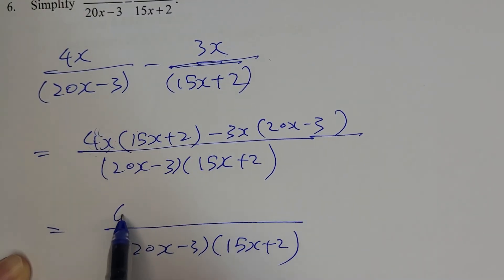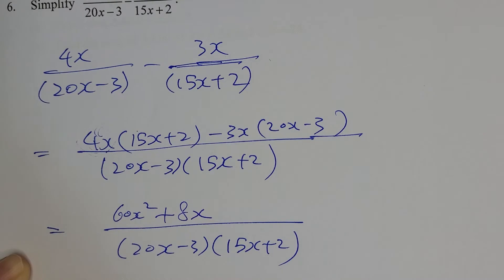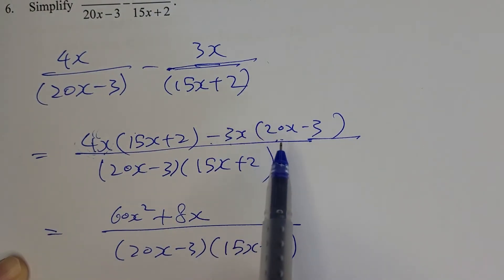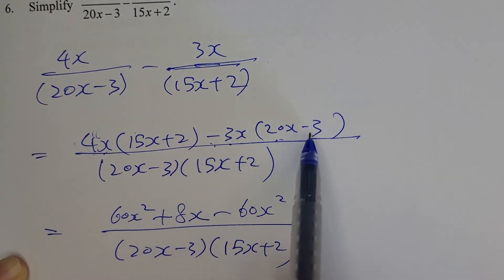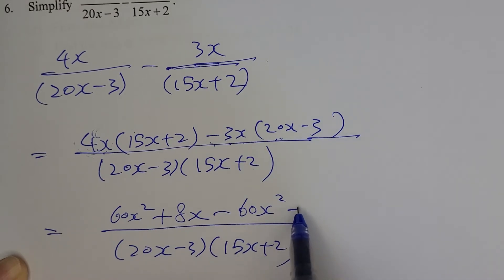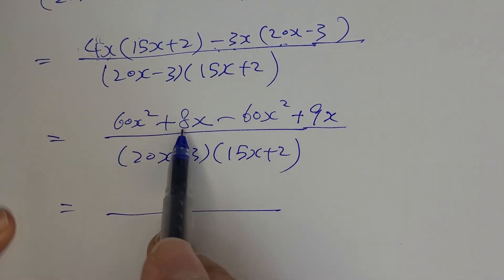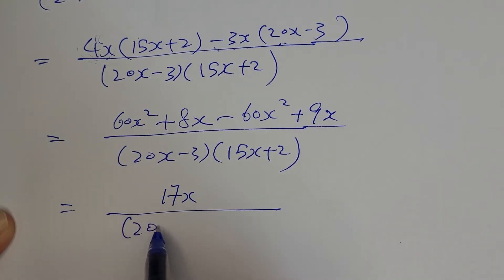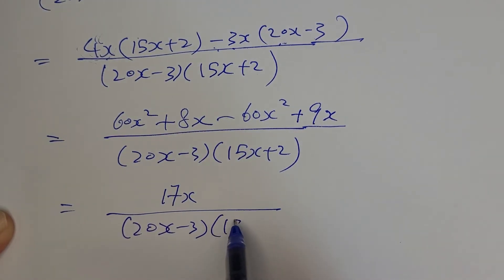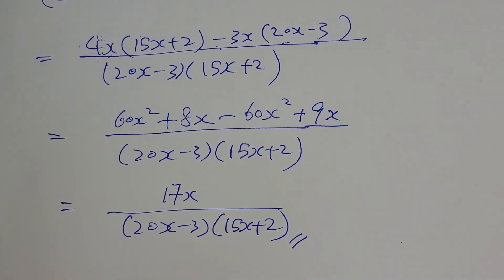Expand the numerator: 4x times 15x gives 60x squared; 4x times 2 gives plus 8x; negative 3x times 20x gives negative 60x squared; and negative 3x times negative 3 gives plus 9x. The 60x squared terms cancel, and you get 17x in the numerator. The final answer is 17x over (20x minus 3)(15x plus 2).